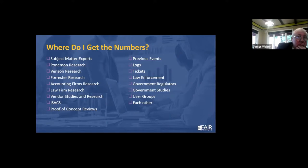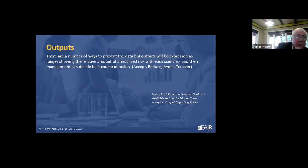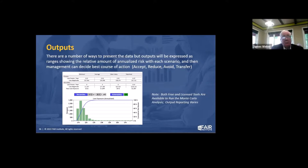For software outputs, rather than the low-tech example, if you plug your numbers into software you get a loss exceedance curve or loss expectancy curve that finance people may recognize. You'll see ranges of costs and your vulnerability based on all the controls you have in place — people, processes, and technology. There are both free and paid tools that can run these curves.